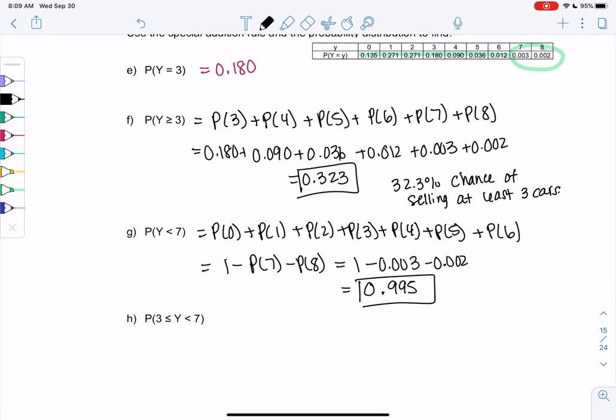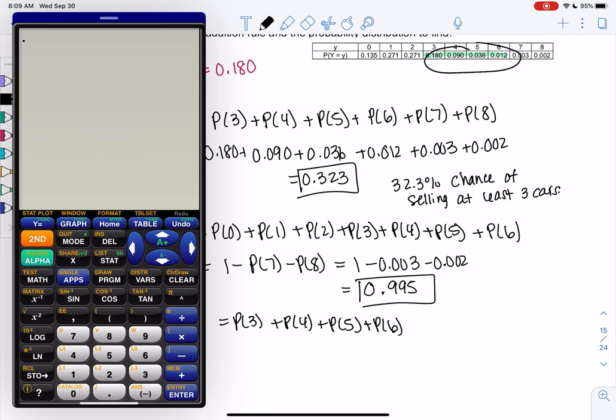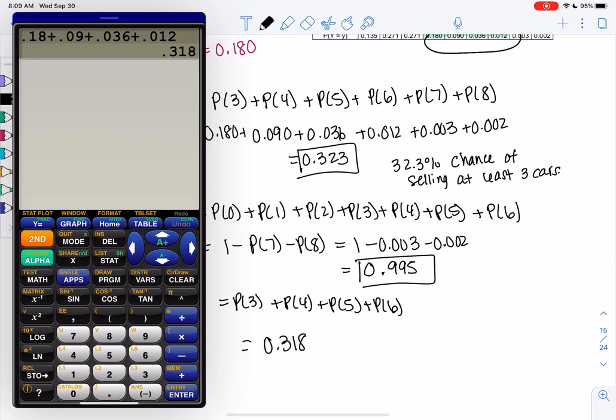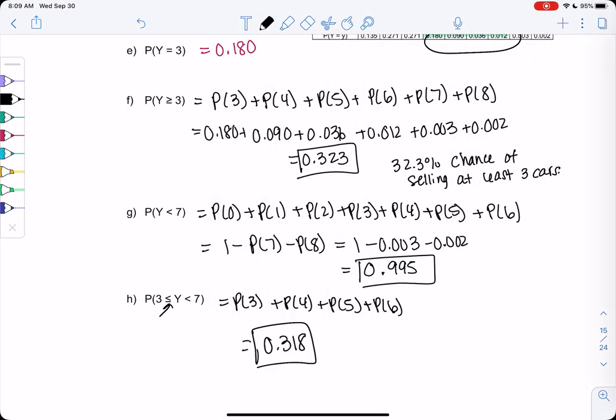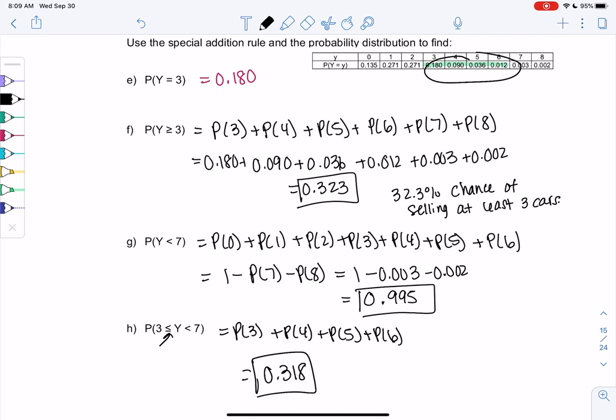And then between 3 and 7, what this is saying is include 3, but don't include 7. That's what that little symbol means. So 3 to 6. So that little symbol means include the 3. So we'll add those up: 0.18 plus 0.09 plus 0.036 plus 0.112. So that's random variable notation and finding some probabilities.